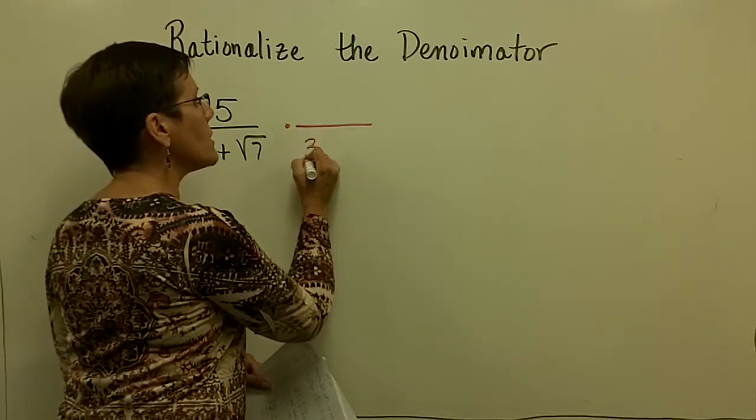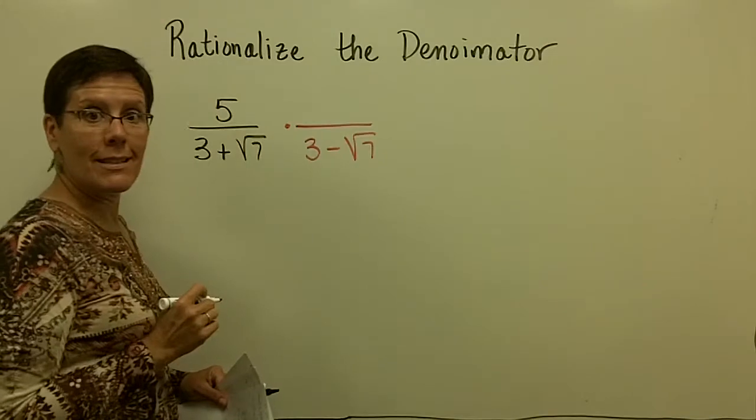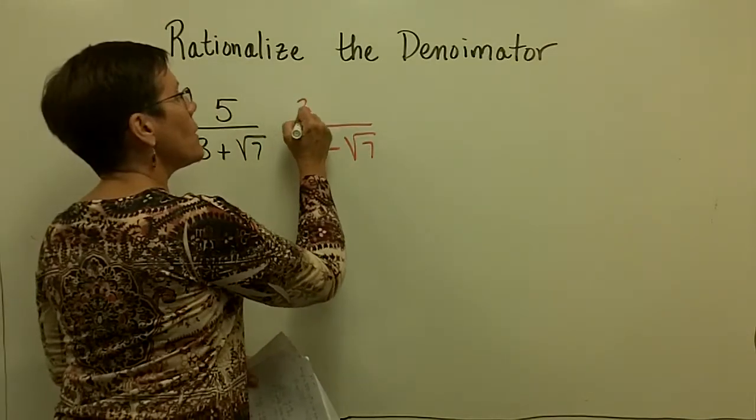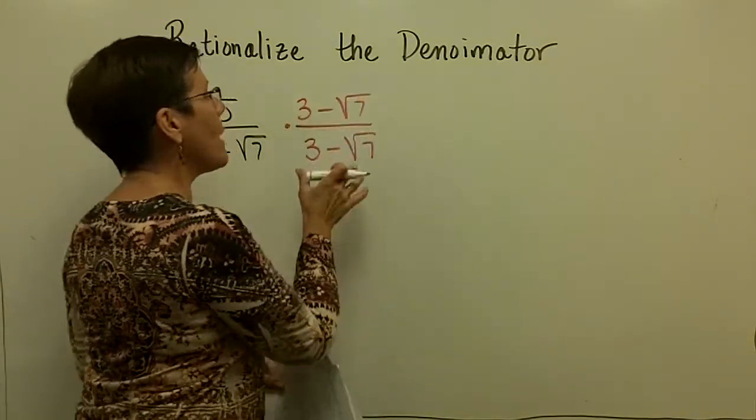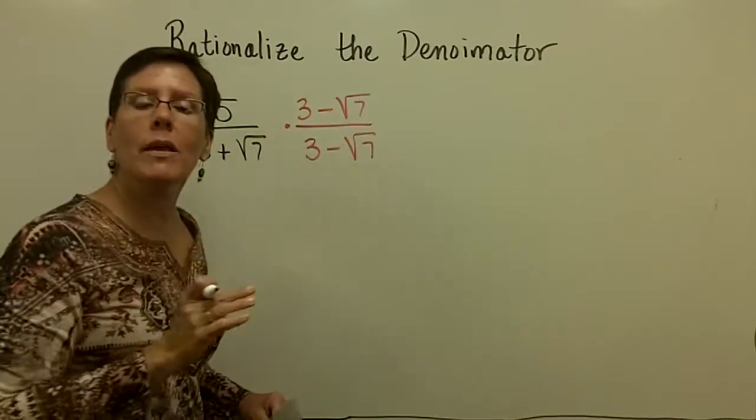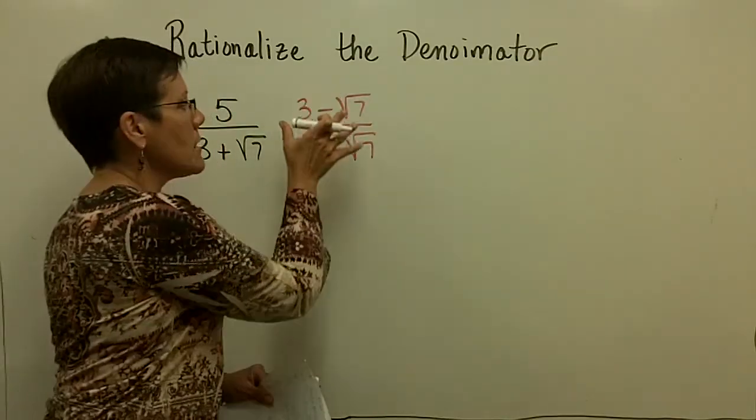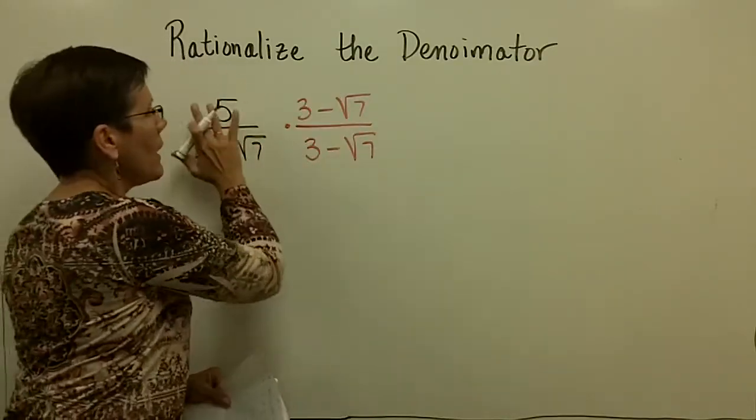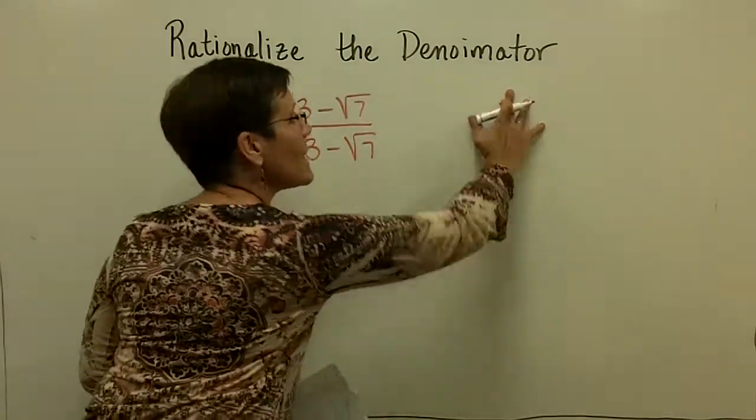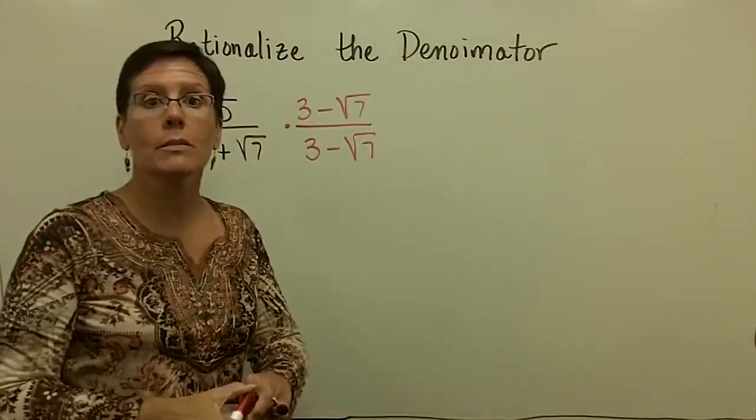So we don't use 3 plus the square root of 7, we use 3 minus the square root of 7. But if we multiply the bottom by that, we have to multiply the top by that, because we have to be multiplying by the number 1 - the same thing on top and the same thing on the bottom. If we multiply all of that by 1, we get the same answer, but it's going to get rid of the radical in the basement.